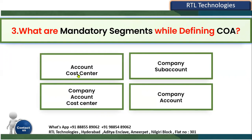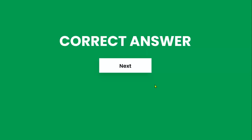The options are: account and cost center; company, account, and cost center; company and sub-account; or company and account. Cost center is not mandatory — it is optional. The correct answer is company and account. These two segments are mandatory whenever we are configuring the chart of accounting structure for any client. Click on this — this is the correct answer.